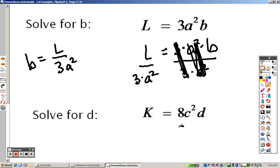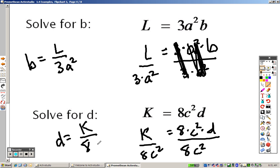Same thing over here. 8 times C squared times D equals K. So solve for D. I'll divide both sides by 8 and C squared, because I'm trying to get D by itself. So you get D equals K over 8C squared.